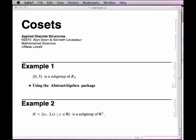Hello. In this video, I'd like to show you a couple of examples of cosets of a subgroup of a group. The first example is a finite one, and make the observation that the set {0, 3} is a subgroup of the integers mod 6.